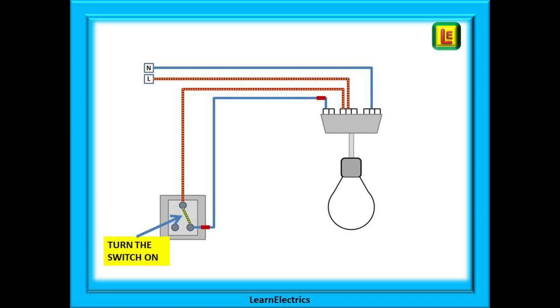If the switch is turned on, the contacts are closed. Electricity can flow from the common terminal to the terminal with the wire in it. Now electricity travels along the blue phase wire to the switch block in the ceiling rose.